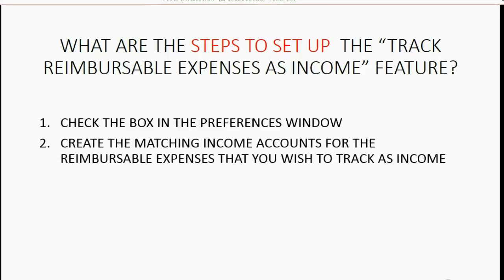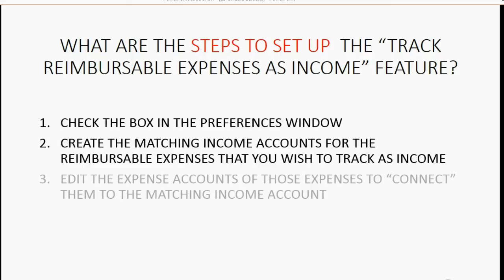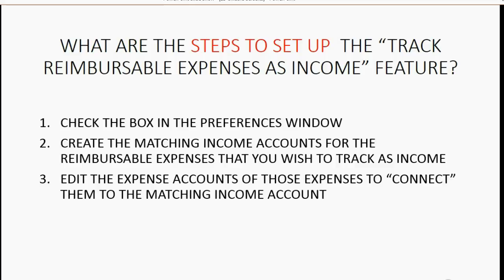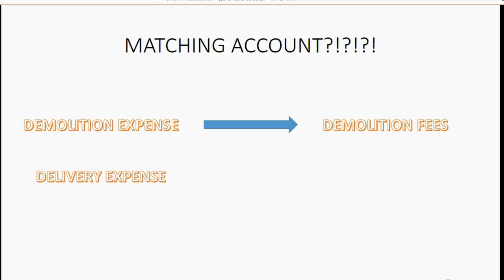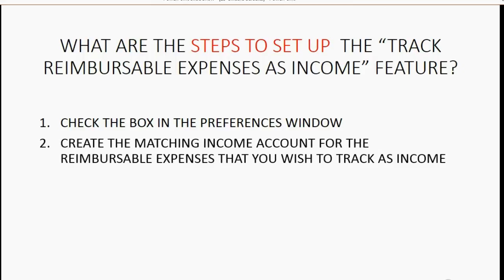Next, we have to create matching income accounts for the reimbursable expenses we wish to track as income. After creating these accounts, we will edit the original expense accounts to connect them to the matching income account. For example, since we have Demolition Expense, we must create an account called Demolition Fees to hold the income. Similarly, for Delivery Expense, we create Delivery Fees to track and record income when we ask the customer to reimburse us.